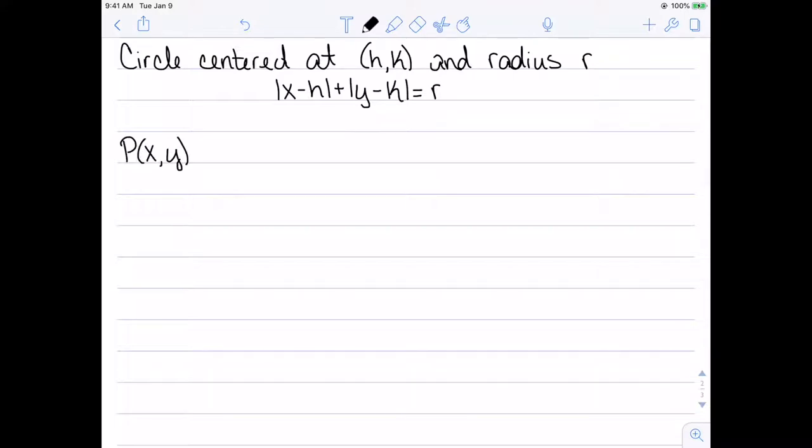In order to actually show this, let's let p be a point on my circle. Then I know the distance between my point p and my center c is equal to r by definition of the circle and what the radius actually is.